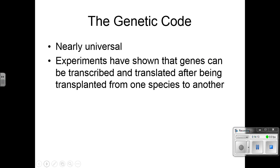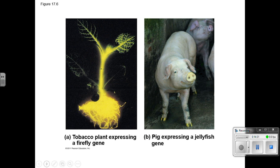The genetic code is nearly universal. Experiments have shown that genes can be transcribed and translated after being transplanted from one species to another — it's really cool because the code is so universal in all living things that you can take genes and express them in other organisms. Here is a pig and a tobacco plant both expressing a gene that makes jellyfish glow — actually, a firefly gene. You can see that when this gene was put into this pig, he is expressing it in his hooves and his snout — that's where the gene is active.